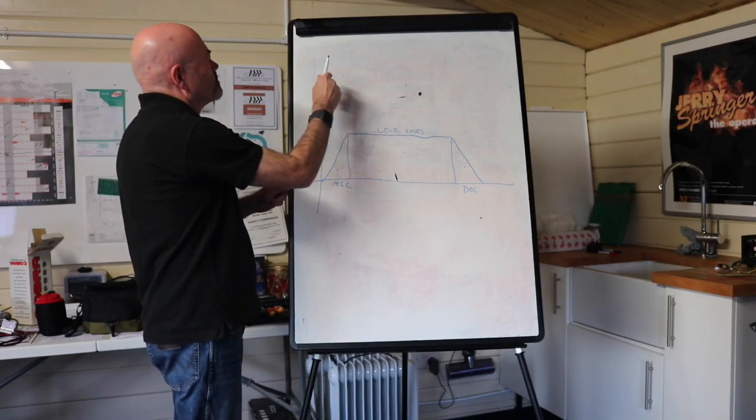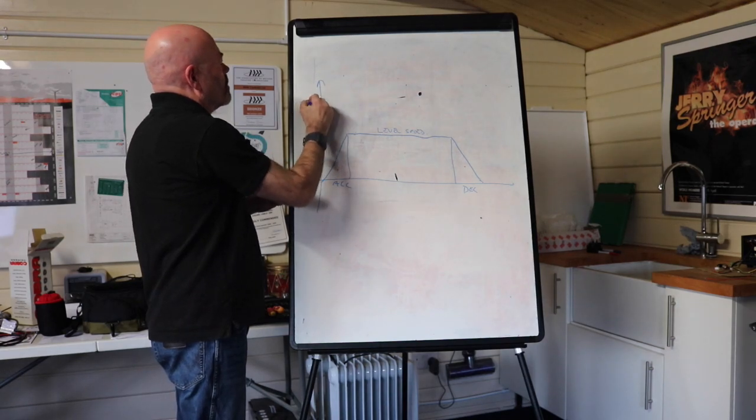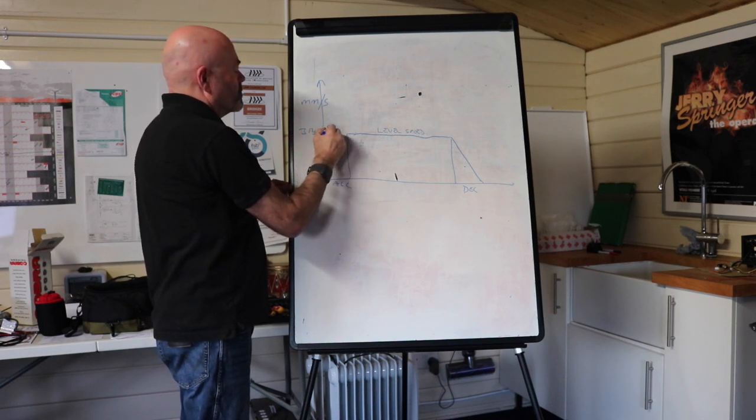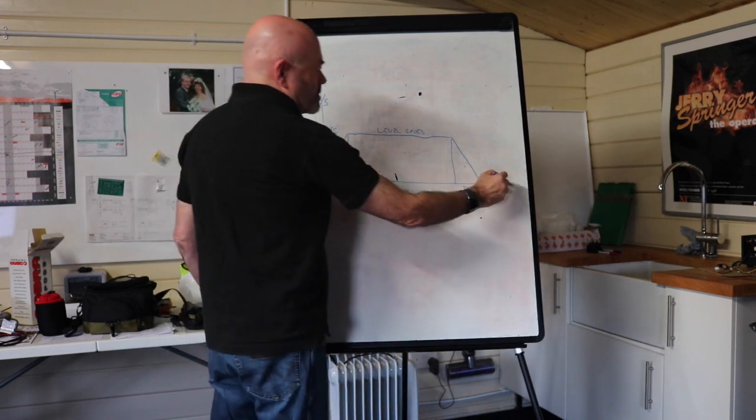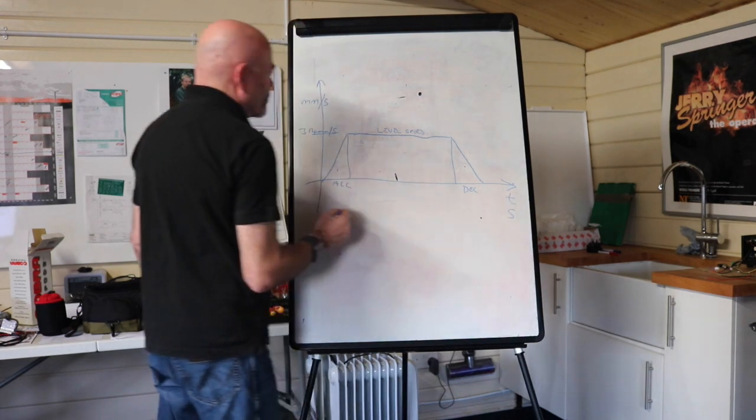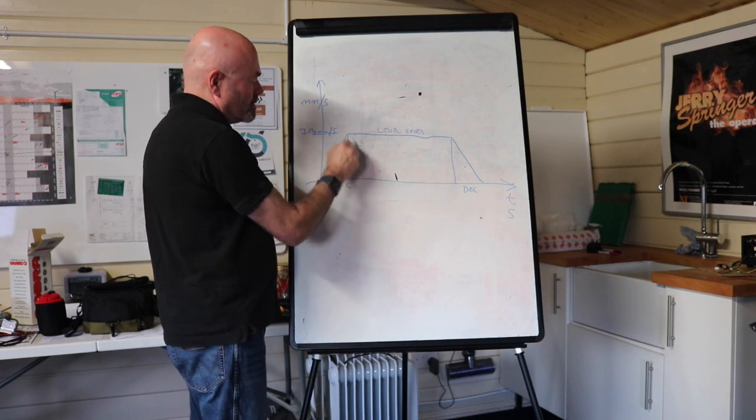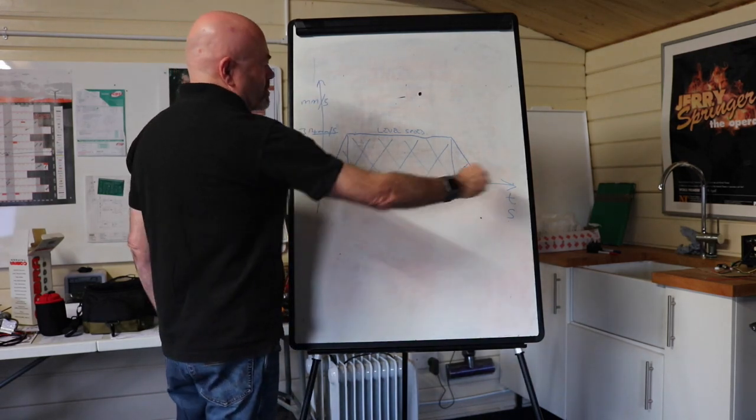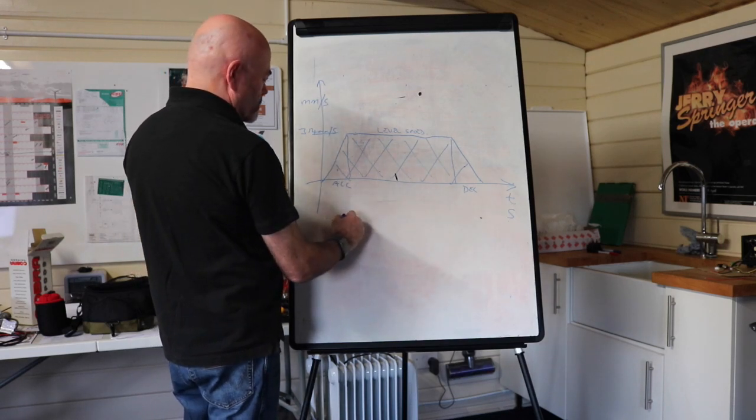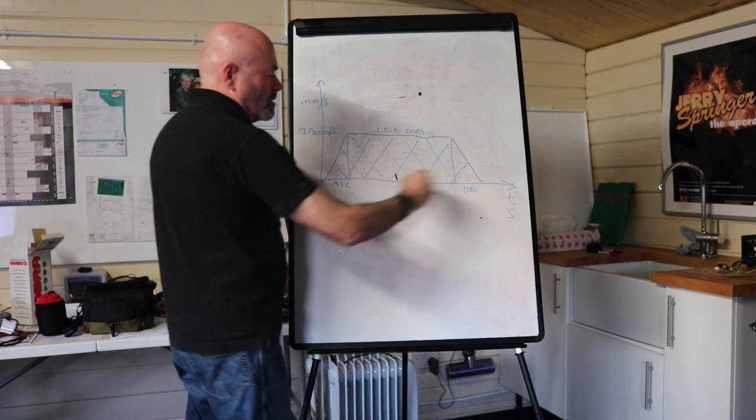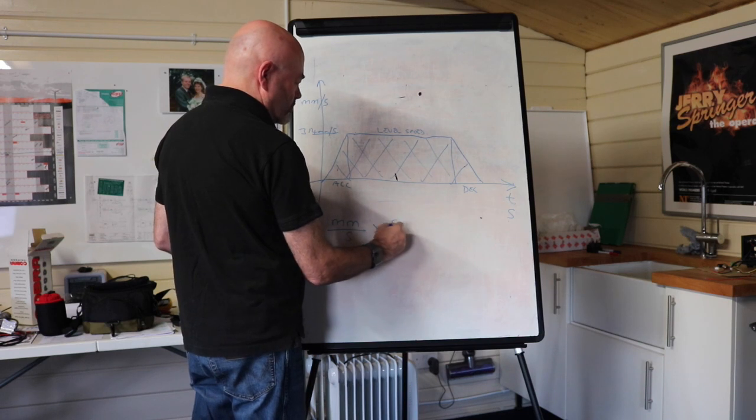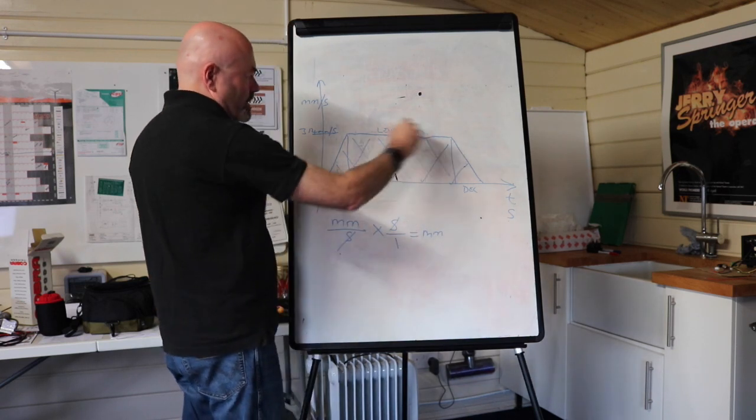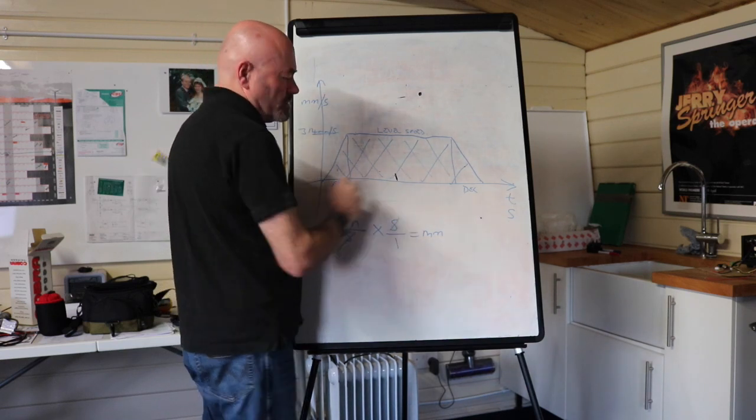Now this is the speed in, say, millimetres per second. So we know our full speed here was 314 millimetres per second. This is time measured in seconds and the distance travelled is this area here. And we get that by multiplying this by this. So millimetres per second, multiplied by seconds, seconds cancel out, equals millimetres. So that this area, in other words that, multiplied by that, is the distance travelled.